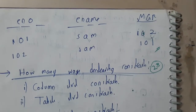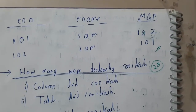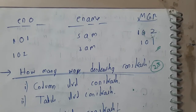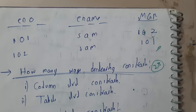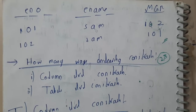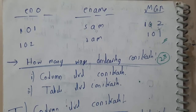I hope everyone got a clear idea on self-referential integrity constraint. In the next tutorial, we'll be going through how we can declare constraints at the column level and table level. Let us meet in the next tutorial. Thank you, thanks for watching.